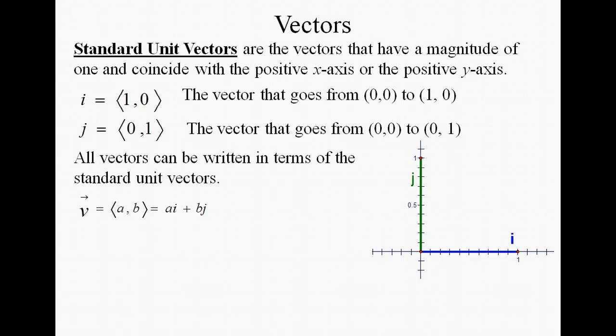We can write all vectors in terms of these standard unit vectors. Let's take a specific example. Suppose that we had vector p that has an endpoint at (3,-4). We can rewrite that as 3i - 4j.